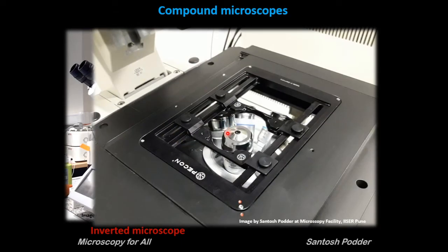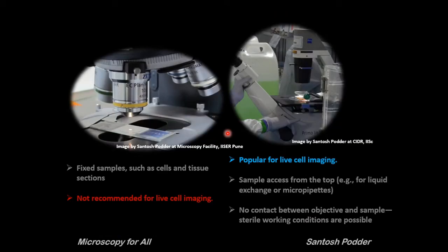You can ask which compound microscope you should use — there are benefits and limitations in both systems. In upright systems, objectives come directly from the top, so they are generally not suitable for live cell imaging. In inverted systems, they are very popular for live cell imaging because you can easily use culture flasks or culture dishes. However, you can still do live sample imaging in upright systems using a water-dipping objective that goes directly into the culture, though maintaining sterile working conditions is a challenge. In inverted systems, there is no contact between objective and sample, so sterile working conditions are easier to maintain.